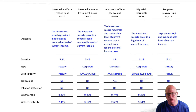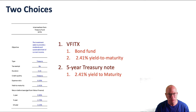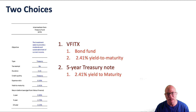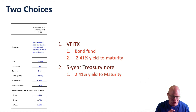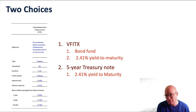Let's take that intermediate term treasury investment fund, as listed on the screen here. You could either hold that bond fund — which right now is getting a 2.41% yield to maturity — or you could own a five-year treasury note. You could buy one or the other. Aside from differences in divisibility, the bond fund would be easier to buy and you could sell portions of it back, but let's say you're just looking at the choice between the bond fund or treasury note, both roughly with the same yield to maturity.